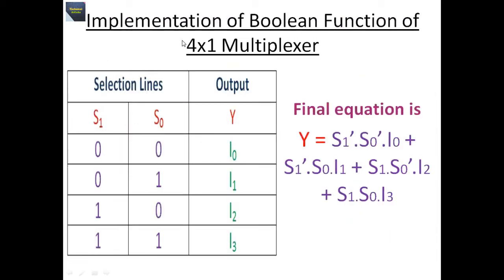From this truth table, the Boolean function of the 4x1 multiplexer is derived. The final equation is: y = s1' · s0' · i0 + s1' · s0 · i1 + s1 · s0' · i2 + s1 · s0 · i3. For example, for the row with 0 0, we get s1 complement dot s0 complement dot i0. There are four minterms that form the Boolean function of the 4x1 multiplexer.